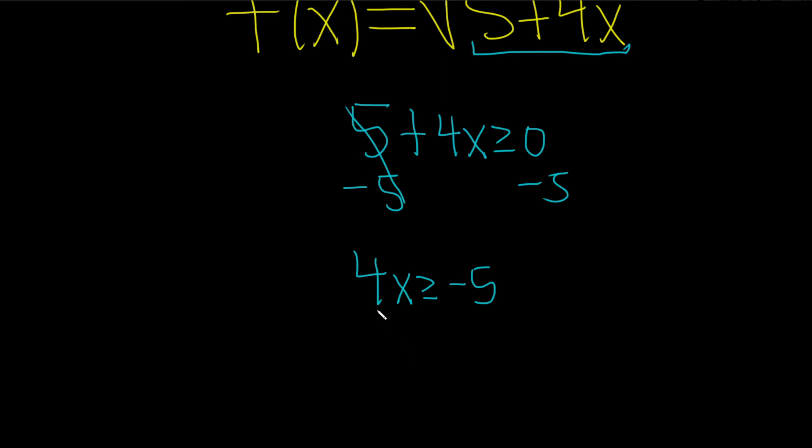And then we would just divide by 4, divide by 4. And that would give us x greater than or equal to negative 5 over 4.